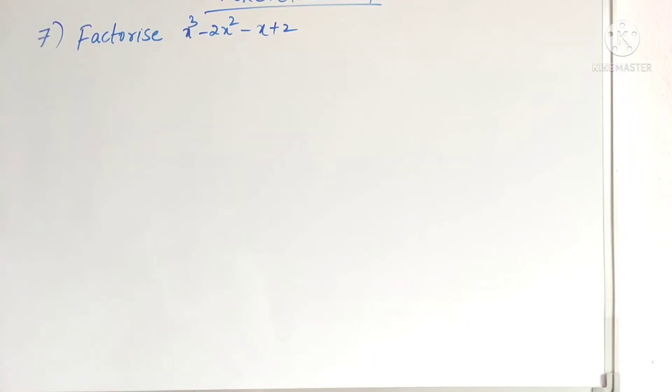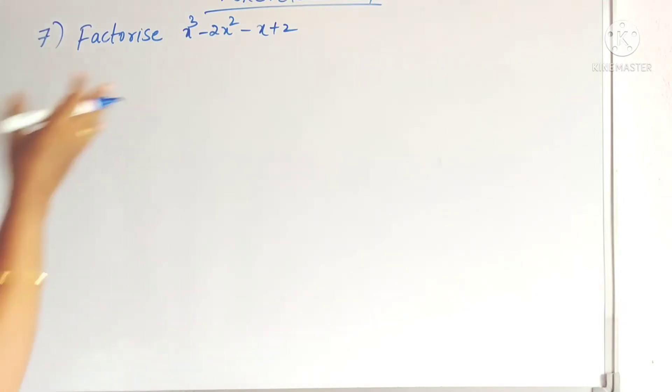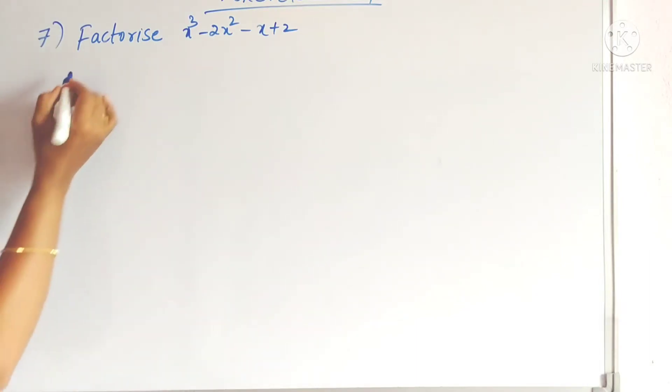The first one: x cube minus 2x square minus x plus 2. So we have to find out the factors for this polynomial.